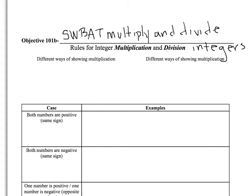Before we get into what multiplying and dividing integers looks like, I want to first go over the different ways you might see multiplication. We're used to two common ways: something like 3 dot A, or 3 times A using an X. Another way you might see multiplication is something like 3 parenthesis A — whenever we see a number touching a parenthesis, that means multiplication, and that's something we have to remember.